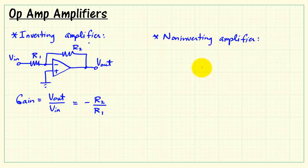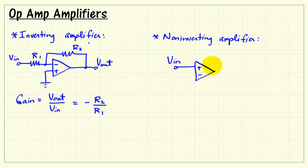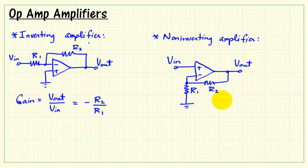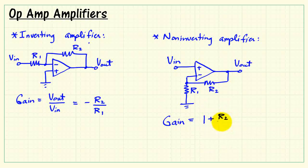Let's look at another popular amplifier style called the non-inverting amplifier. In this case, I draw the op-amp with its terminals in the other direction — non-inverting terminal on top. We apply the input directly to the non-inverting terminal. We arrange the resistor network to have R1 going from the inverting terminal to ground, and then the feedback resistor R2 connects the output back to the inverting terminal. For this circuit, the gain is 1 plus the ratio R2 to R1.